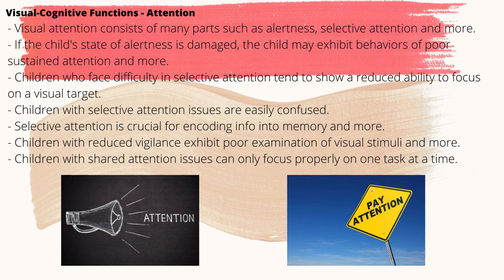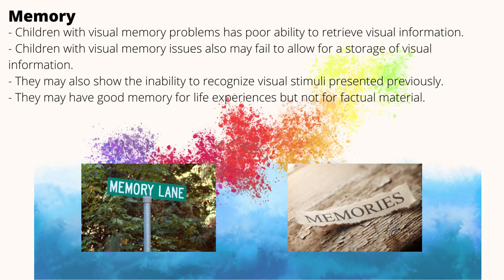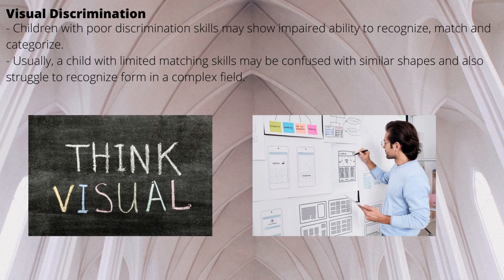Children with reduced vigilance will show poor examination of visual stimuli. Children with problems in shared attention can only focus properly on one task at a time and cannot multitask. Regarding memory, children with visual memory problems have poor ability to retrieve and store visual information in short- or long-term memory. They may fail to store visual information and show inability to recognize previously presented visual stimuli. They may have good memory for life experiences but not for factual materials like mathematics and science.